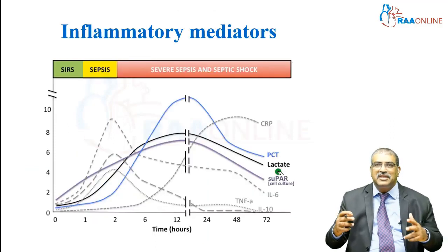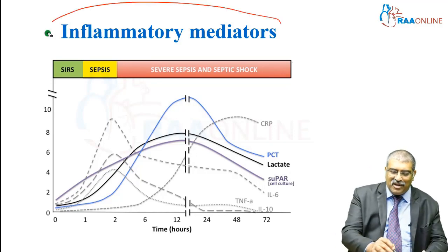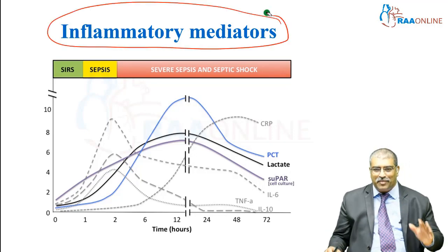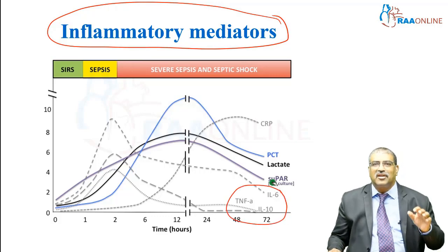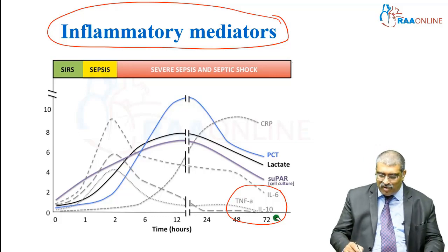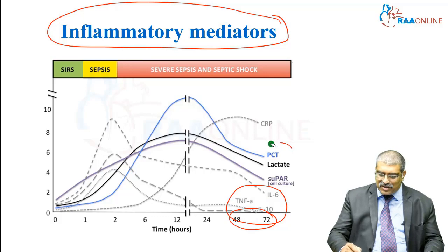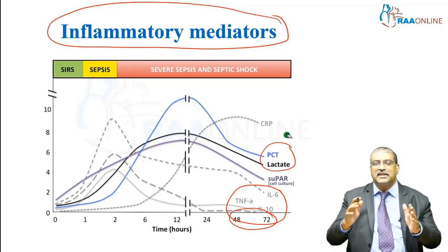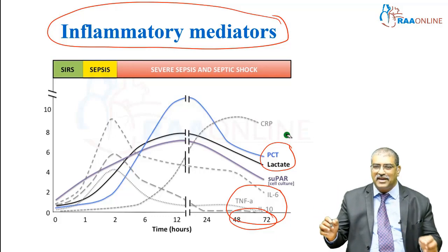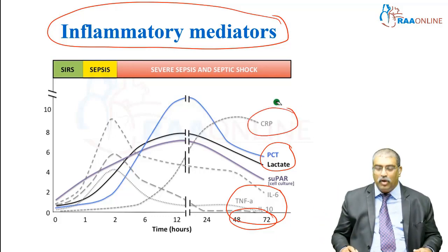Just like we have enzyme profiles for acute myocardial infarction, we have inflammatory mediators in septic shock. Most inflammatory mediators such as tumor necrosis factor and interleukins will return to baseline within 48 to 72 hours. Procalcitonin and lactate will take some more time — usually around 3 to 4 days — and CRP might take weeks to come back to normal.